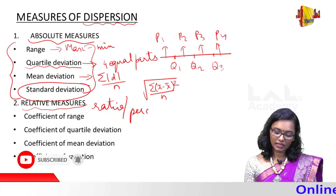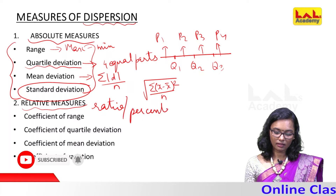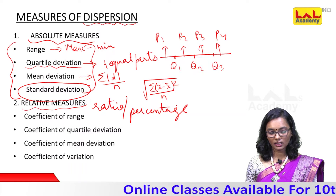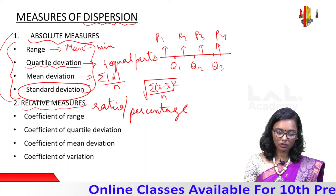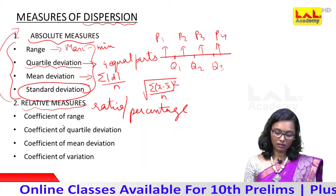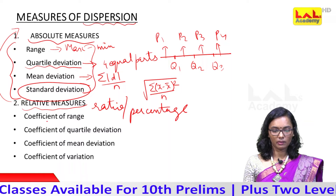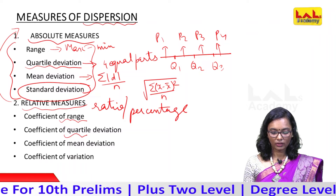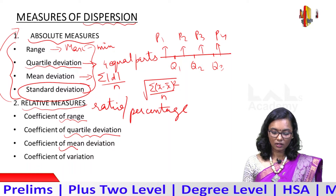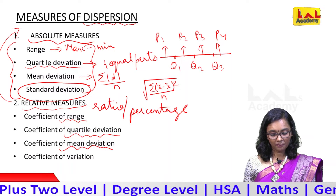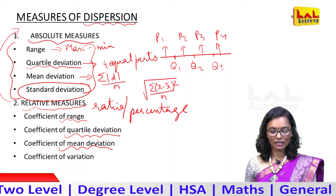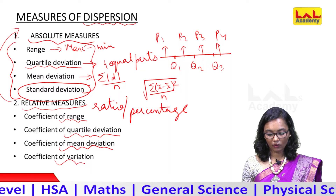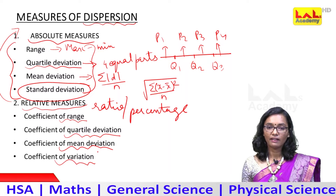We calculate the relative measures. Relative Measures is related to Absolute Measures. The names are: Coefficient of Range, Coefficient of Quartile Deviation, Coefficient of Mean Deviation. The last ones are Coefficient of Standard Deviation and Coefficient of Variation.